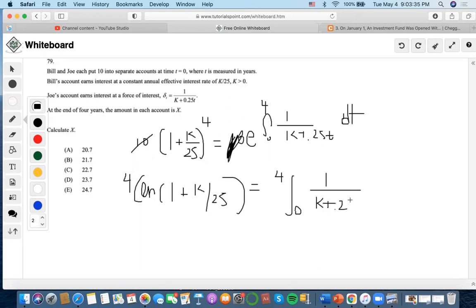We can set U equal to K + 0.25T, and dU equals 0.25dT. Then we can put 1/0.25 outside and change it to 1/U. This simplifies to 4 ln(K + 0.25T).